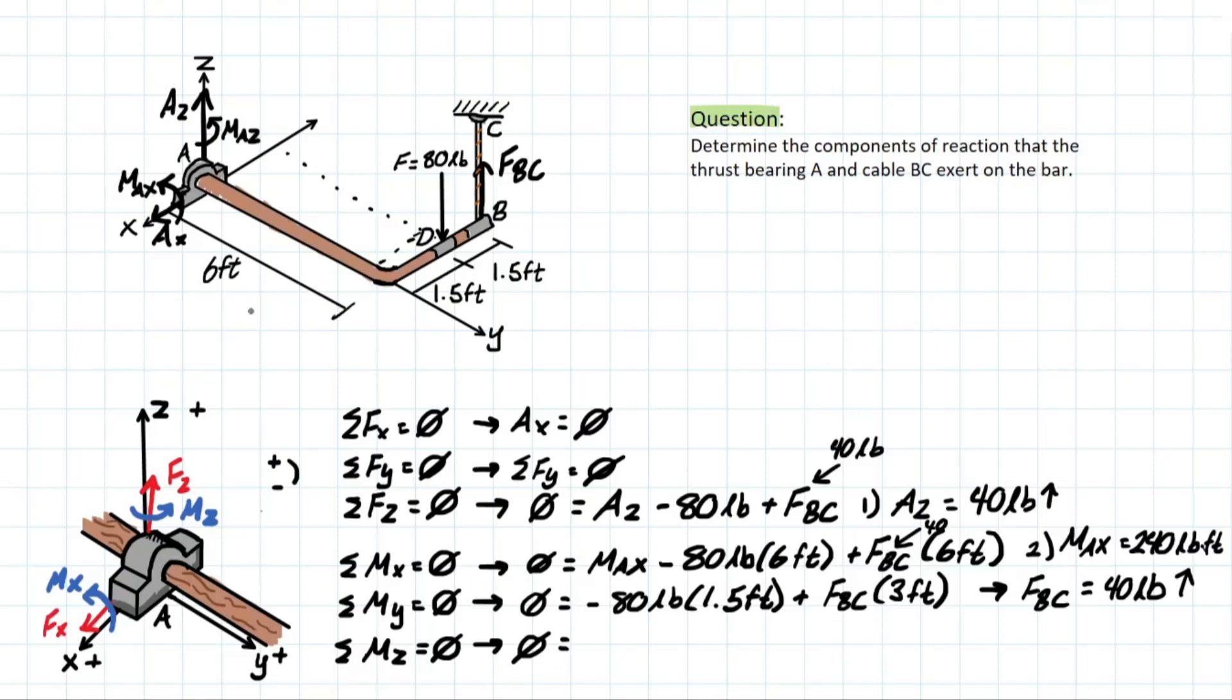There is no force acting along the X or Y plane that is creating a moment along this Z axis. So we know that the only moment here is going to be MAz. MAz. Therefore, MAz is equal to zero.